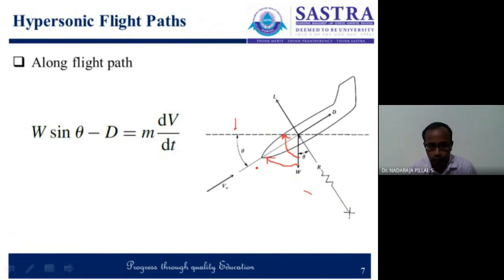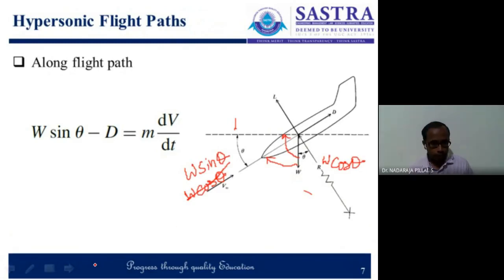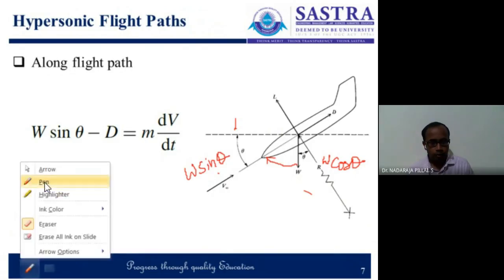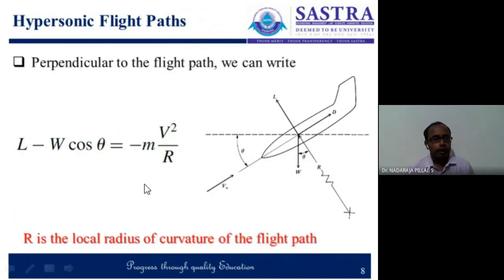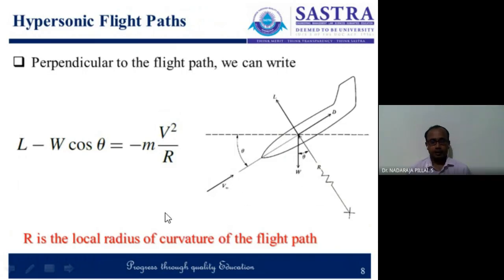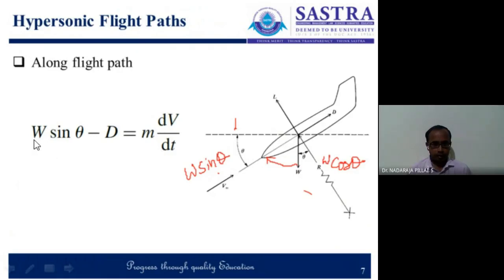If we want to solve this in the flight path direction, we can write W sin theta in the direction of drag and W cos theta in the direction of lift. It becomes L minus W cos theta equals minus m V-squared by r, because we consider r as the local radius of curvature. And W sin theta minus the drag force is equated to m times dV/dt.